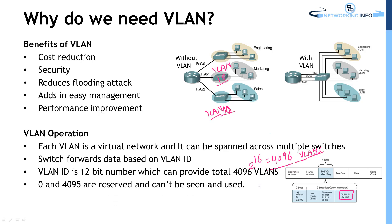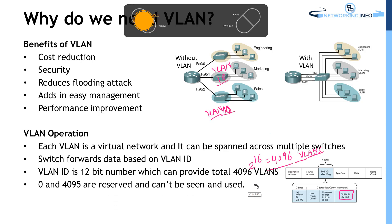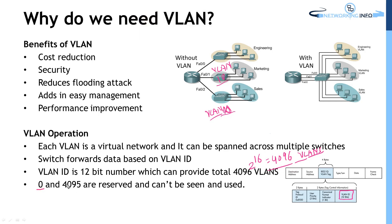Some VLANs are reserved — you cannot see, use, or delete them. VLAN 0 and VLAN 4095 are reserved. VLAN 0 is used for strict priority in voice networks, and VLAN 4095 is used for dropping traffic. So we can use VLANs 1 through 4094 in our switches.